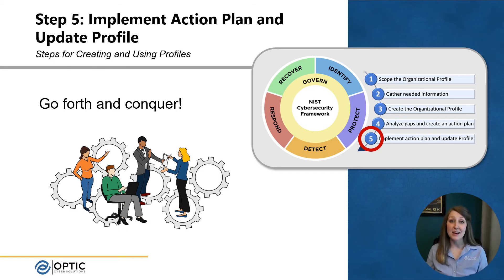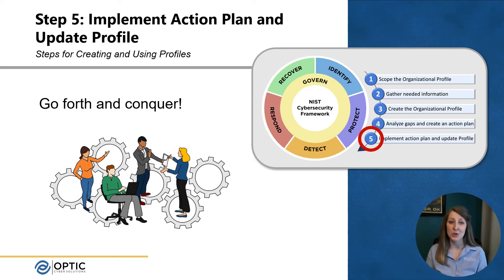The final step is to implement the action plan and update the organizational profile — basically, go forth and conquer. At this point, you know what you have today, what you need to be doing based on your risk and requirements, and you have a prioritized list of gaps. Now it's time to put this into practice.